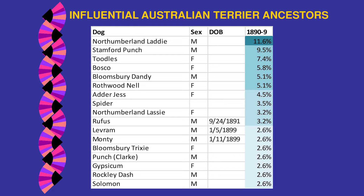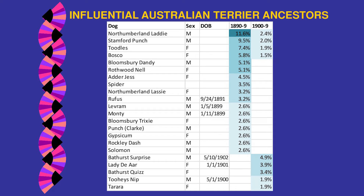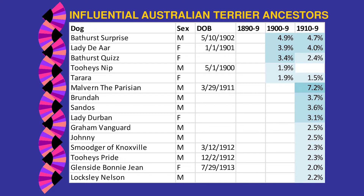Moving to the 1900s, those top four influential dogs significantly dropped in their relationship coefficients as the breed expanded. New dogs from the early 1900s emerge: Bathurst Surprise, Lady Diarra, Bathurst Quiz, Tui's Nip, and Terara. In the 1910s, dogs from the 1900s continue to be influential, with new additions: Malvern the Parisian, Brunda, Sandos, Lady Durbin, Johnny, Tui's Pride, Glenside, and Bonnie Jean start becoming influential.